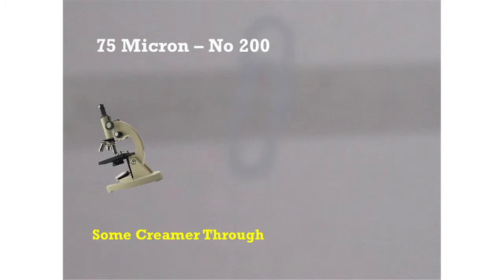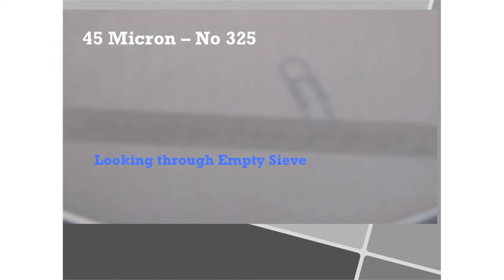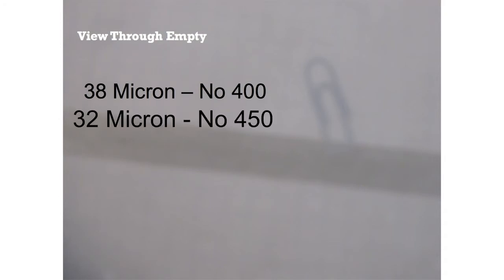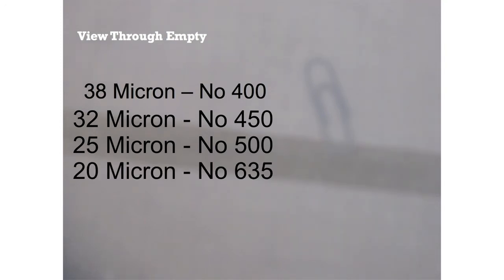Next, we observed a ruler and paper clip behind a 45 micron number 325 sieve. As you can see, there's only a faint shadow — the mesh almost completely stops the light. Sieves with opening sizes less than 45 microns — namely a number 400 at 38 microns, a number 450 at 32 microns, a number 500 at 25 microns, and a number 635 at 20 microns — usually require special processes such as vacuum or ultrasonic assists to get effective separation.